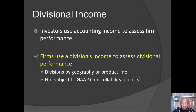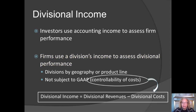We need to consider which costs are under the control of the manager. That means there may be some costs that would be considered under GAAP, but might not be considered for performance evaluation if the manager has no control over those costs. That's an internal decision, and it's going to be unique to each firm.